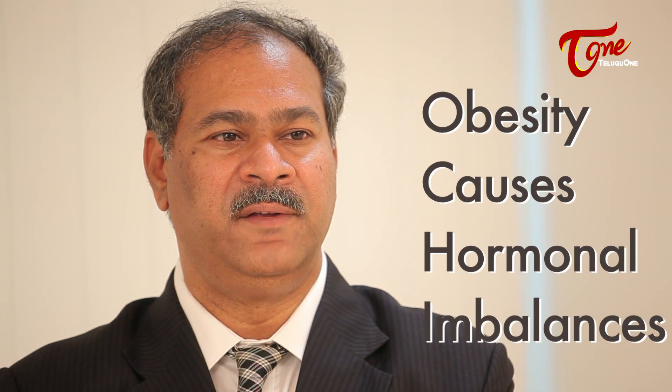Obesity leads to many comorbidities and hormonal imbalances, and if it exceeds more than 25 kilos of excess weight, people may need to go for weight reduction or bariatric surgery. It is done laparoscopically with very small cuts on the abdomen and people recover very fast. The most common types are sleeve gastrectomy and gastric bypass. They are done very safely and people reach close to their ideal weight over a period of six to nine months.